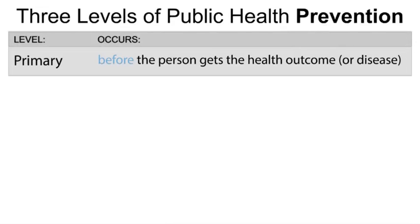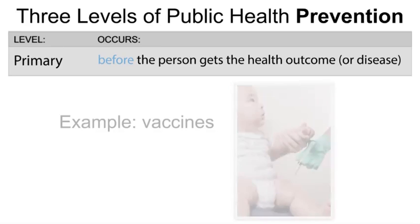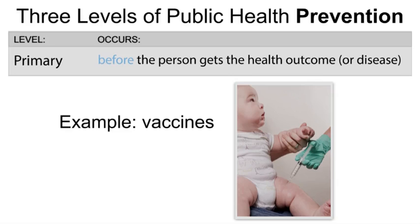Primary prevention occurs before a person gets a health outcome and tries to prevent the health outcome from occurring. Primary prevention may reduce the prevalence, risk, and or rate of a health outcome. An example of primary health prevention is vaccination, which prevents diseases from being contracted.